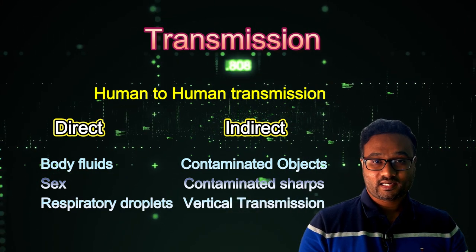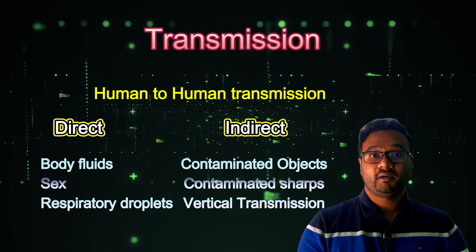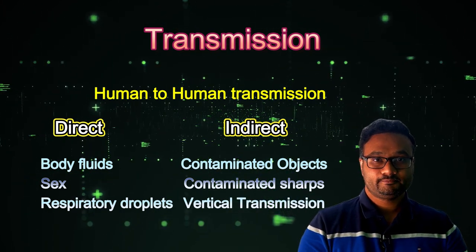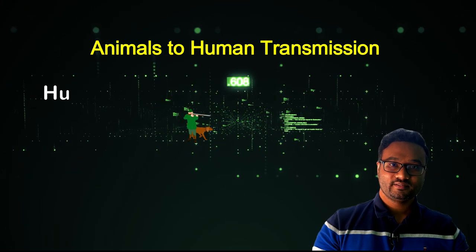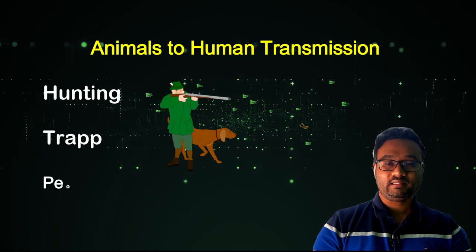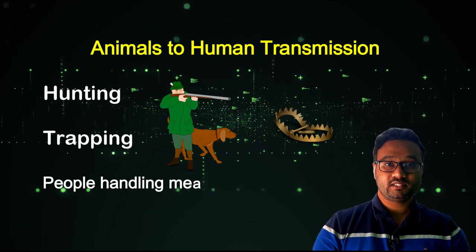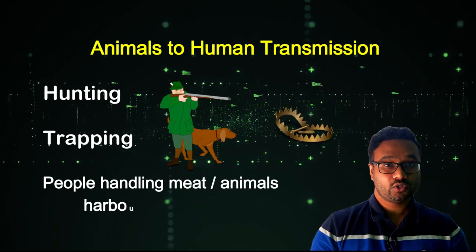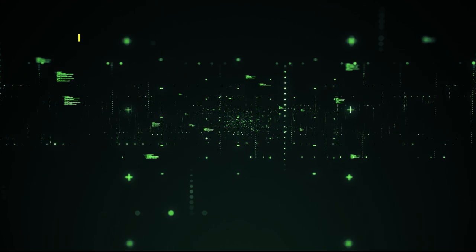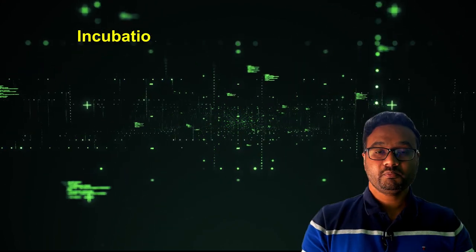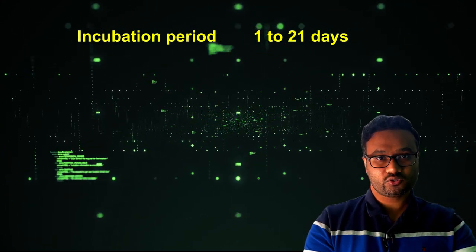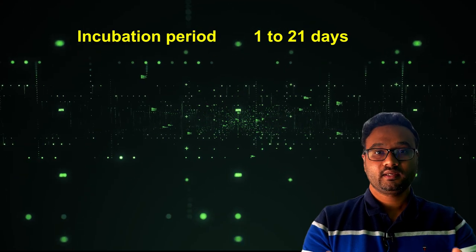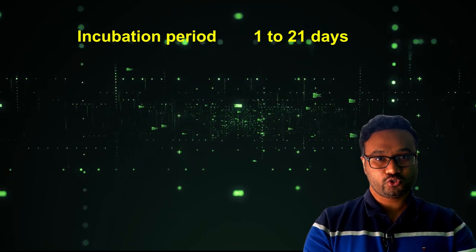Vertical transmission — from mother to child — is also possible. Animal-to-human transmission can occur through hunting, trapping, handling the meat of animals harboring the virus, or by consuming them. The incubation period — the time for the virus to enter the body and start causing symptoms — can range from 5 to 21 days.